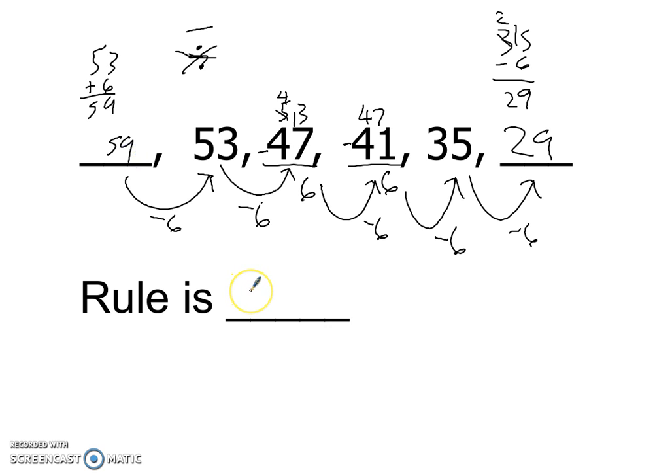And that looks like it's 59. So we got a 59, 53, 47, 41, 35, 29. And our rule was minus 6.